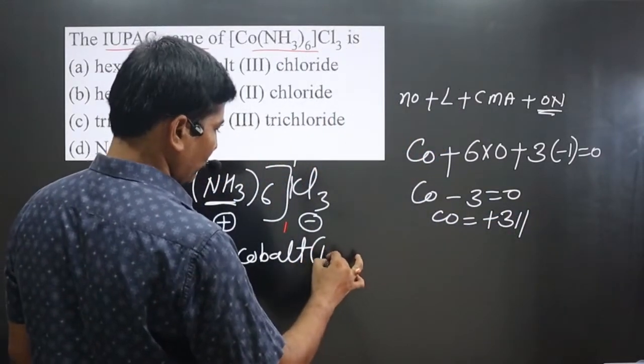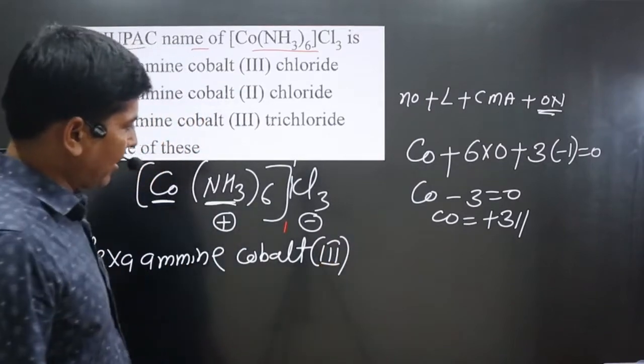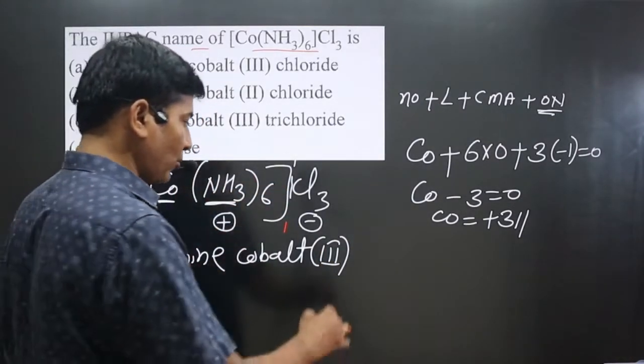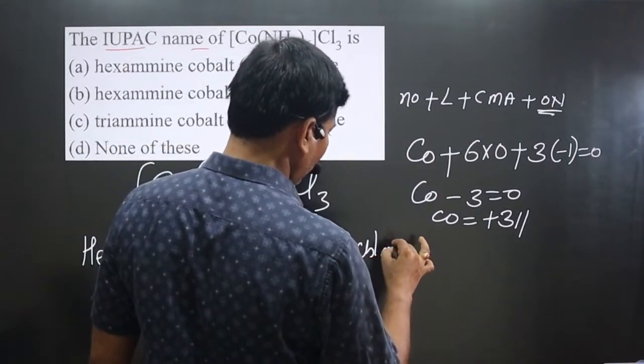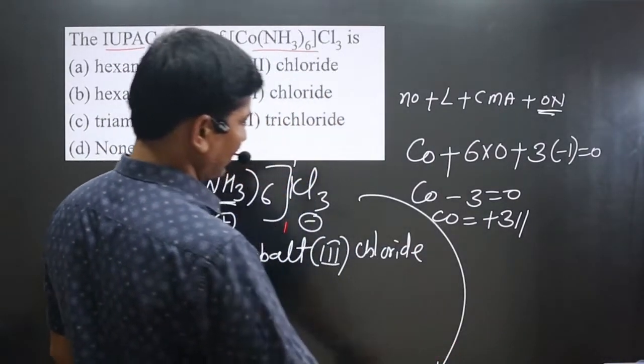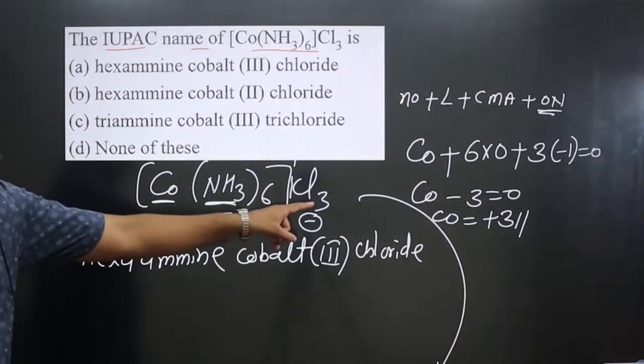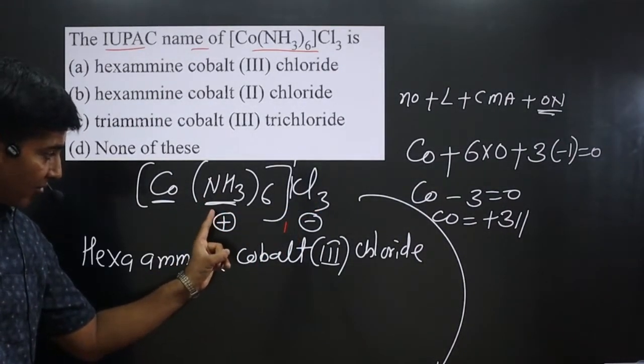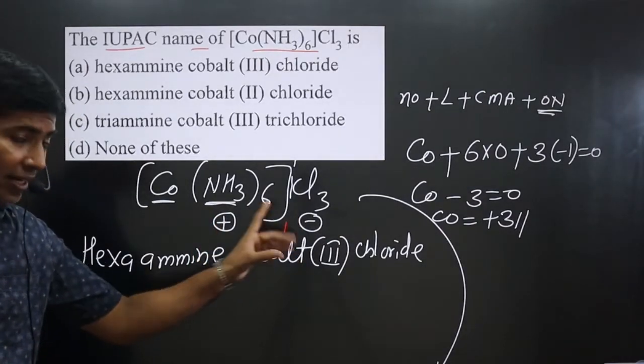Then we have to write in Roman numbers: 3. And in the last we have counter ion. It should not be trichloride. We have to write only chloride. We have to write only the name of the counter ion: chloride. Because this 3 is coming by balancing the charge of cationic as well as anionic part.